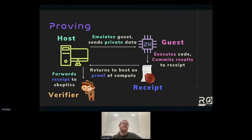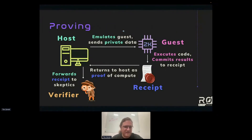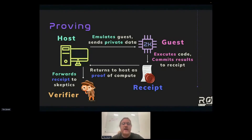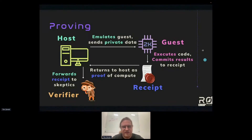What does the architecture look like? In some sense, you have a standard virtual machine architecture where there's a host and a guest. The host emulates the guest; the guest executes whatever it's being asked to execute. Because we're in the zero-knowledge context, the host can send the guest private data — in general, private communication is allowed. That data does not show up in the receipt; nothing is proven about it. But what is proven is which code was executed on the data and the results of executing that code. That gives you a receipt, which comes back to the host as proof that the computation was done the way it was intended.